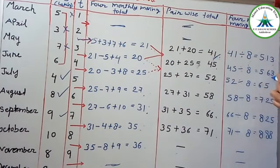The same is 45 divided by 8, so 5.63. 52 divided by 8, so 6.5. 58 divided by 8, so 7.25. 66 divided by 8, so 8.25. And 71 divided by 8, so 8.88.